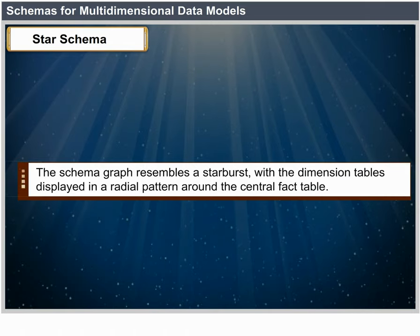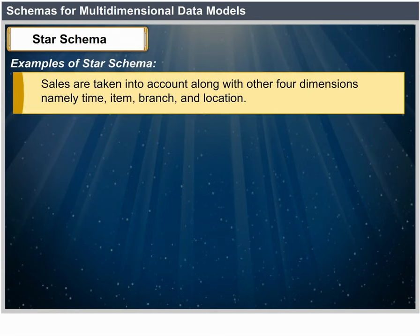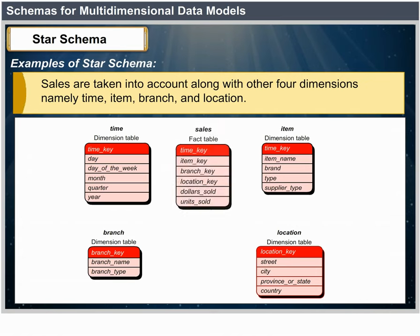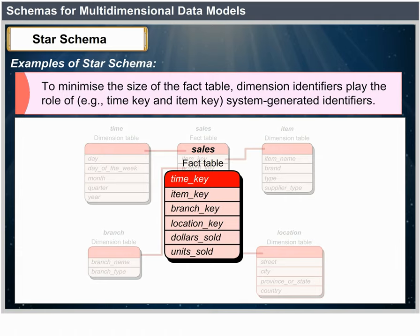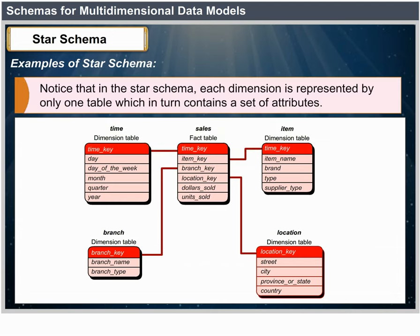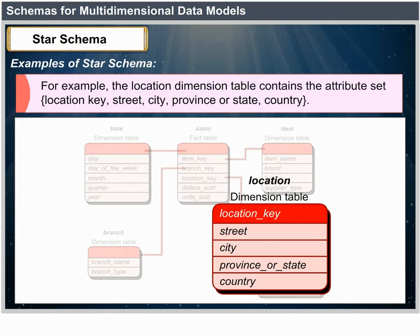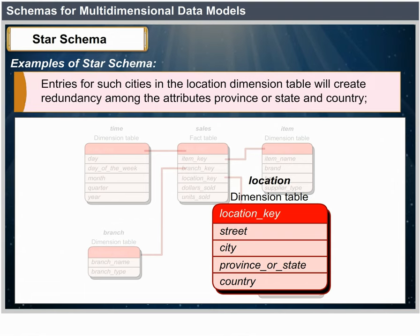Example for star schema: Sales are considered along four dimensions — time, item, branch and location. The schema contains a central fact table for sales with keys to each of the four dimensions, along with two measures: dollars sold and units sold. Dimension identifiers such as time_key and item_key are system-generated. In the star schema, each dimension is represented by only one table containing a set of attributes — for example, the location dimension table provides the attribute set: location_key, street, city, province, state or country. This constraint may introduce some redundancy; moreover, attributes within a dimension table may form either a hierarchy (total order) or a lattice (partial order).